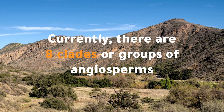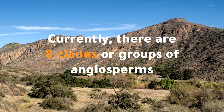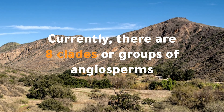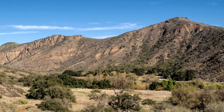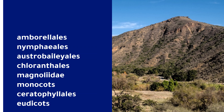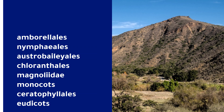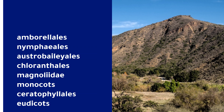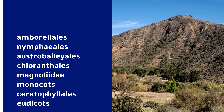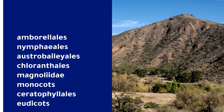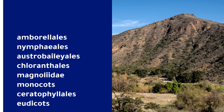Currently, there are eight clades or groups of angiosperms. They include ambrillals, nymphials, ostrabaliols, chloranthales, magnoliidae, monocots, serotophilols, and eudicots.